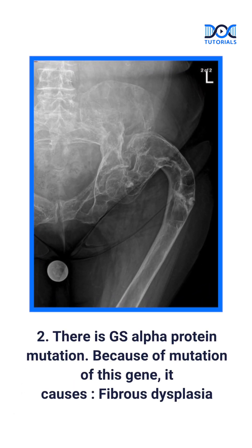Second, there is something called GS alpha protein mutation. And because of the mutation of this gene, you will get fibrous dysplasia.